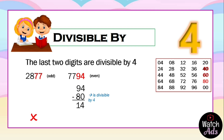If you have memorized your multiplication table, you will know that 14 is not divisible by 4. Therefore, 7,794 is not divisible by 4.